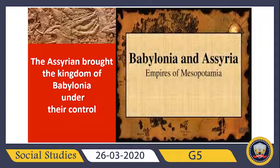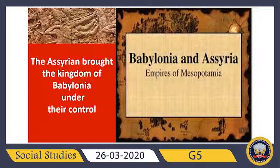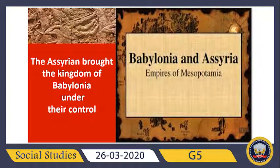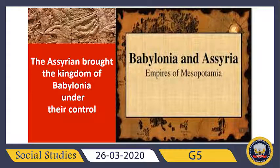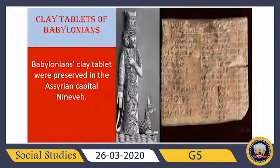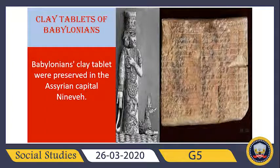Next, we have the connection between Babylonia and Assyria. Both were empires of Mesopotamia, but who ruled over whom? The Assyrians were able to expand because, as we read, they were very tough warriors and knew how to make iron weapons. What they did was bring the kingdom of Babylonia under their control. The cultural and scientific achievements of the Babylonians were usually preserved on clay tablets, and when the Assyrians invaded Babylonia they received those assets.